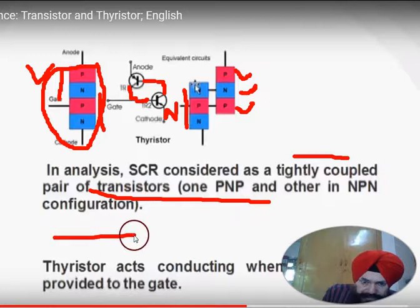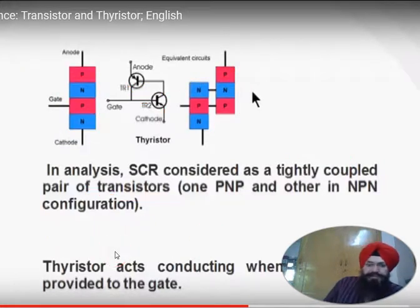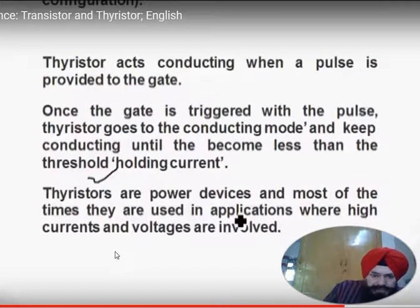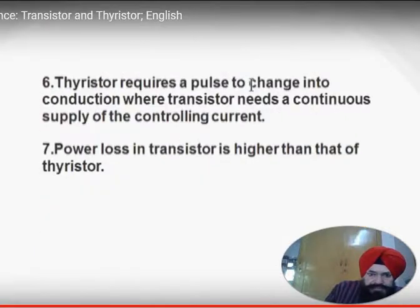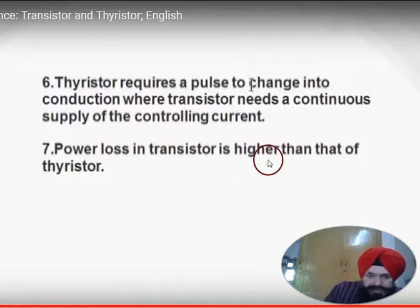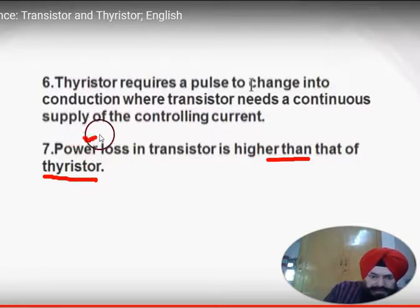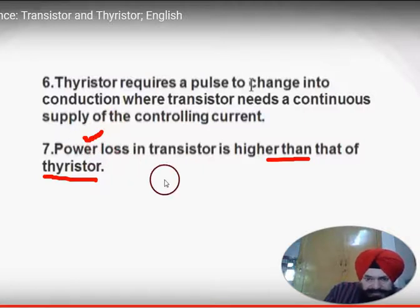The gate controls the current in the thyristor. Also, power loss in a transistor is higher than that of the thyristor — the thyristor is better compared to the transistor in terms of power losses.